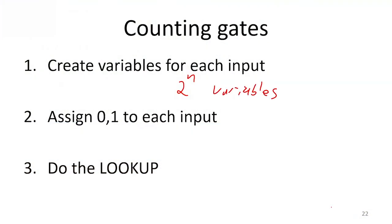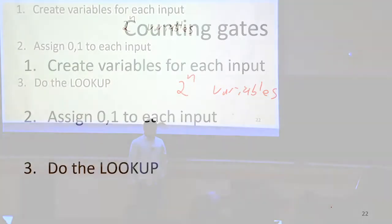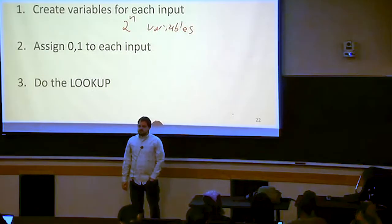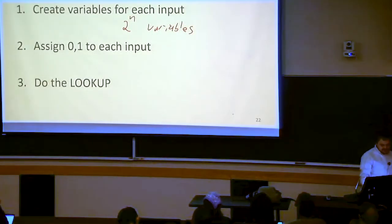Because I needed a different variable per each possible input that we might have. And if we have n input bits, there's 2 to the n different inputs we could see. And then we need to assign 0 and 1 to each input, to each of those variables.